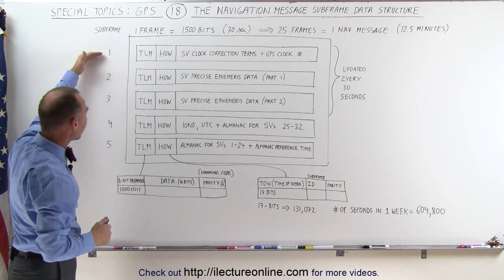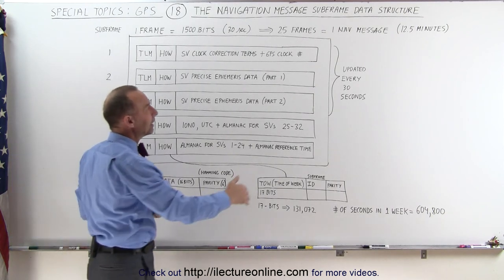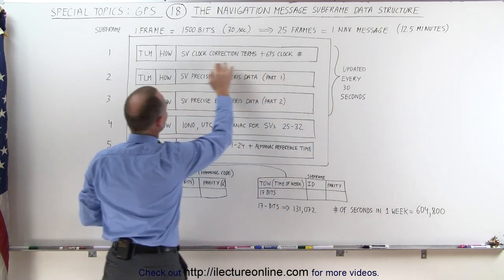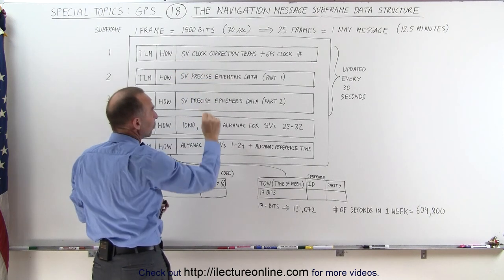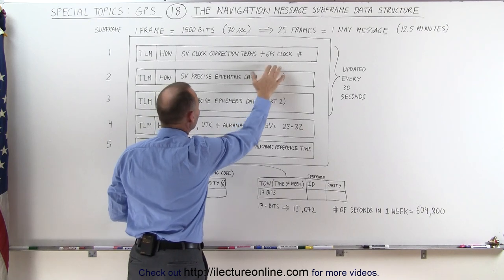Notice that the first three subframes contain data that needs to be updated every 30 seconds. The first one contains the SV, the Space Vehicle Clock Correction Terms, very important, plus the GPS clock number.